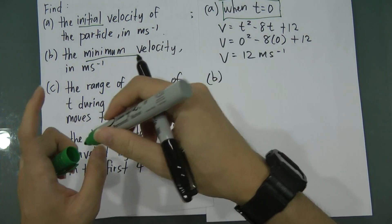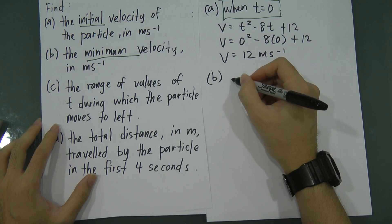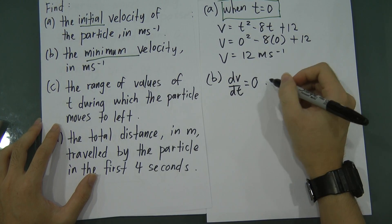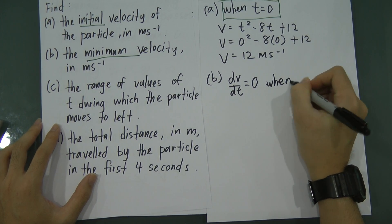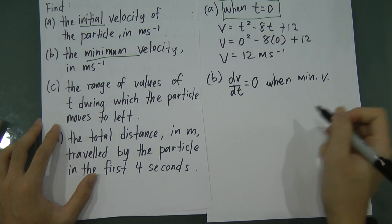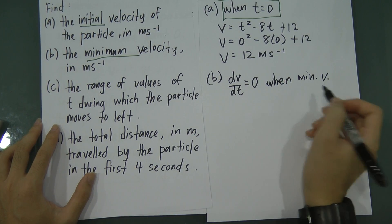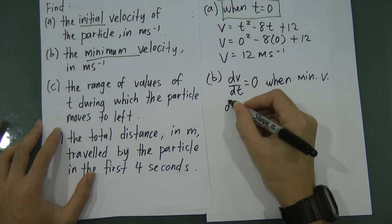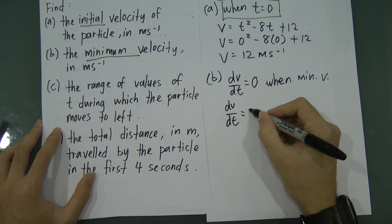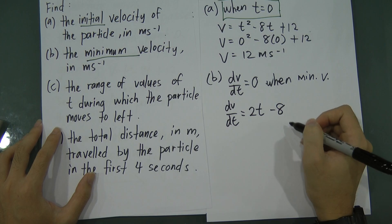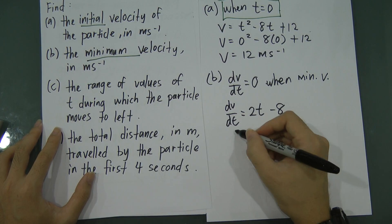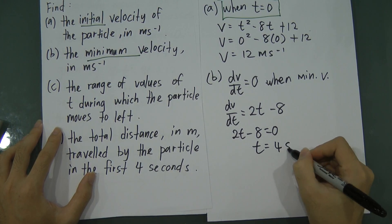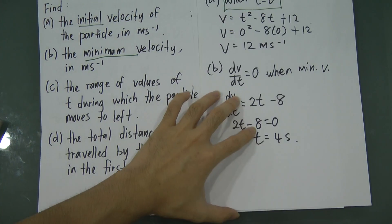For part b, the question asks for minimum velocity. Whenever you see minimum or maximum velocity, differentiate velocity with respect to time and set it equal to zero, i.e., dv/dt equals zero. So differentiating v equals t squared minus 8t plus 12 gives dv/dt equals 2t minus 8. Setting 2t minus 8 equals zero gives t equals 4.